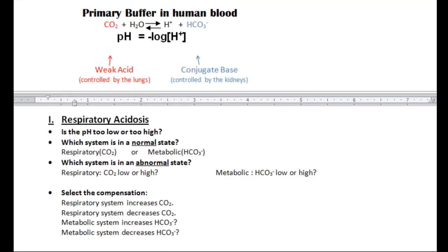First we'll look at the summary section. Respiratory acidosis - pH is too low because we're in an acidic state. Next, which system is in the normal state?